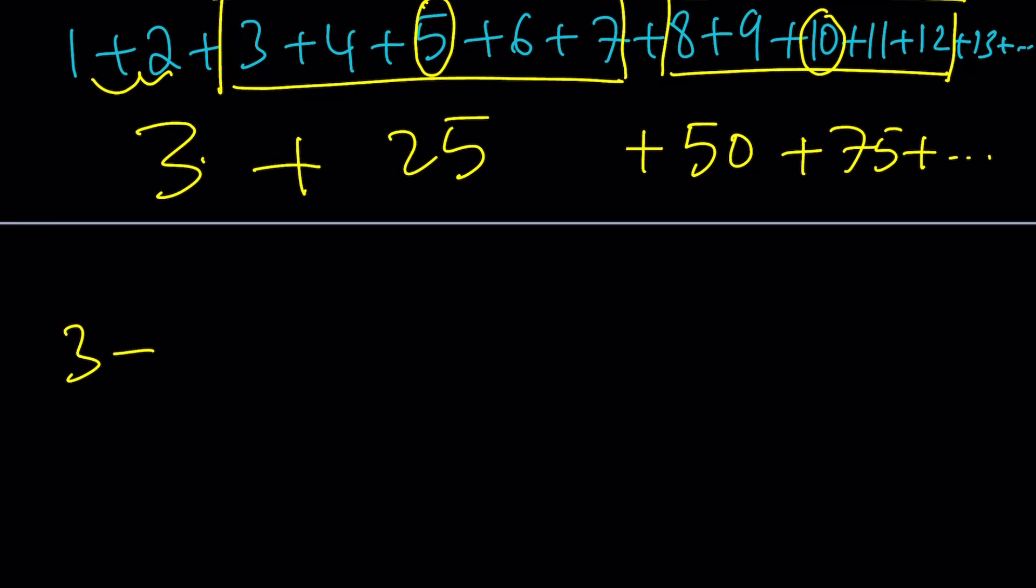And now I have the following sum: 3 plus 25 plus 50 plus 75, so on and so forth. But wait a minute. All these terms, I can factor out 25, because it's a common factor. And inside, I get 1 plus 2 plus 3. Uh-oh, that looks familiar. And then, of course, what is the sum equal to, though?